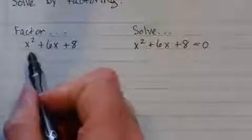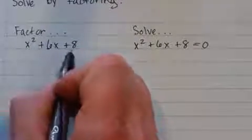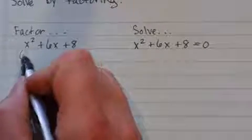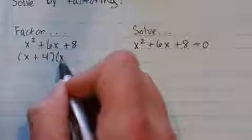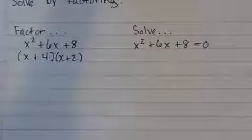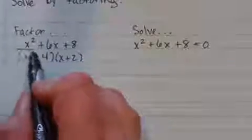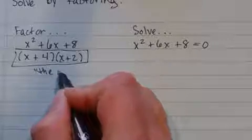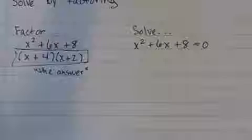We are going to factor this guy. Now let's see, there's three terms, no greatest common factor, plus at the end means same signs. You probably already know it factors into x plus 4 times x plus 2. And in this case, that is the answer, right? We all like to know the answer. We're done. That's the answer to the problem.